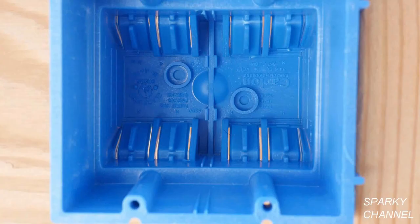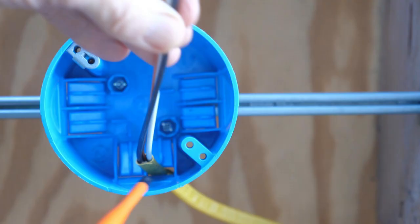And here we are pretty much right back where we started from with a plastic box that has integral clamps, except that it's a 4x4 square box instead of a round box. But it has the same question. Are these clamps to be counted in box fill calculations? In my prep work for doing this video, I found that about 50% of people on the internet in general think that these integral clamps should be counted as box fill, and about 50% think they shouldn't be.